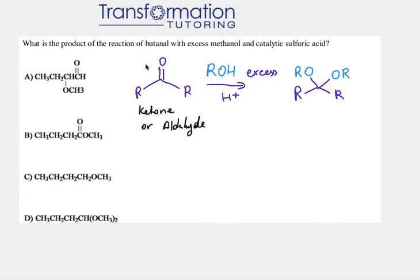In order for this reaction to happen we must start with a ketone or an aldehyde — a C double bond O either in between two carbons or in between a carbon and a hydrogen. That C double bond O will react with excess alcohol. Any kind of hydrocarbon chain R group, with excess alcohol in the presence of an acid, will lead to what we call an acetal product.